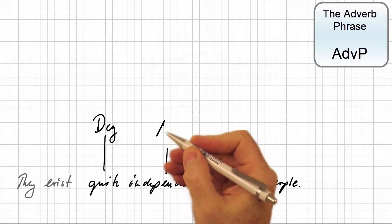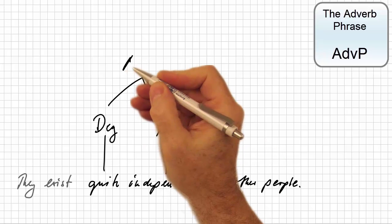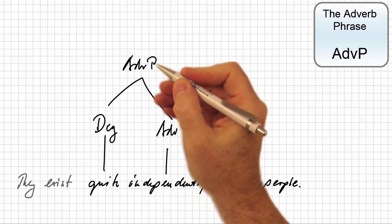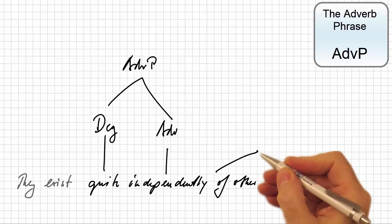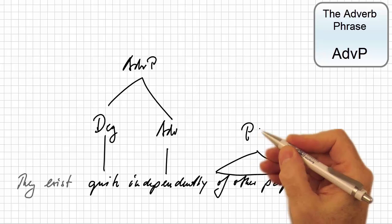So the head is the adverb, and we get an adverb phrase. But what happens if we add the prepositional phrase of other people, whose internal structure doesn't matter here and can thus be presented as a triangle?